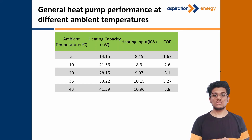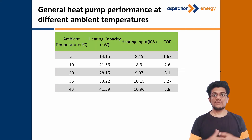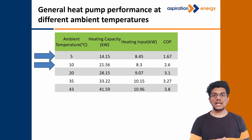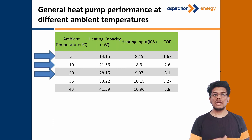Now let us understand the heat pump performance at different ambient temperatures. As you can see, the table shows the ambient temperature, the heating capacity, the input to the compressor, and the COP of the system. At 5 degrees ambient temperature, the heating capacity is around 14.15 kW and the COP is around 1.7. If we increase the ambient temperature to 10 degrees, the heating capacity becomes 21.56 kW and the COP increases to 2.6. If we further increase the ambient temperature to 20 degrees, the heating capacity increases to 28.15 kW and the COP increases to 3.1.